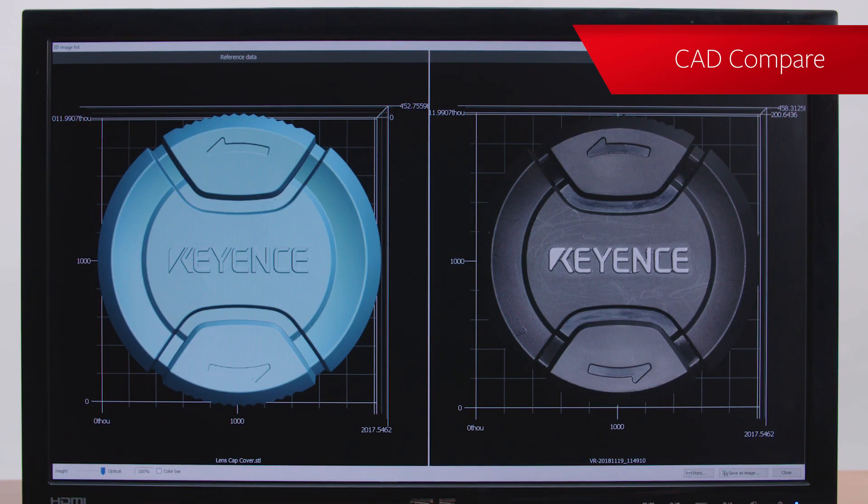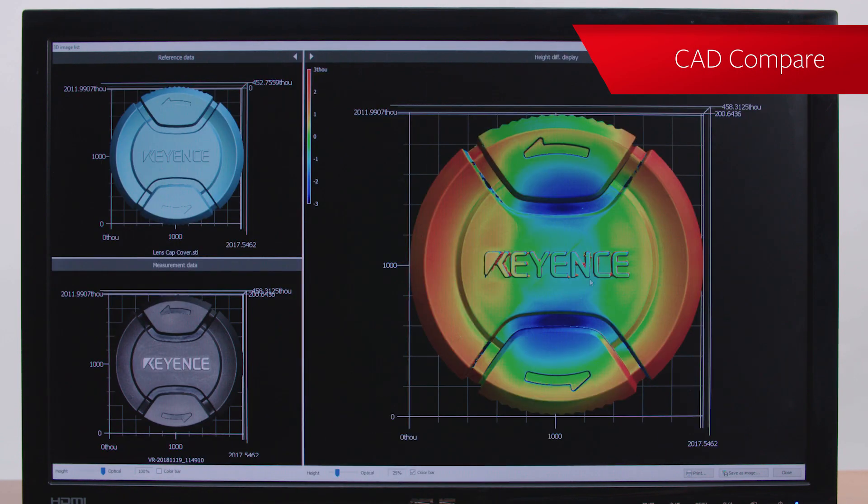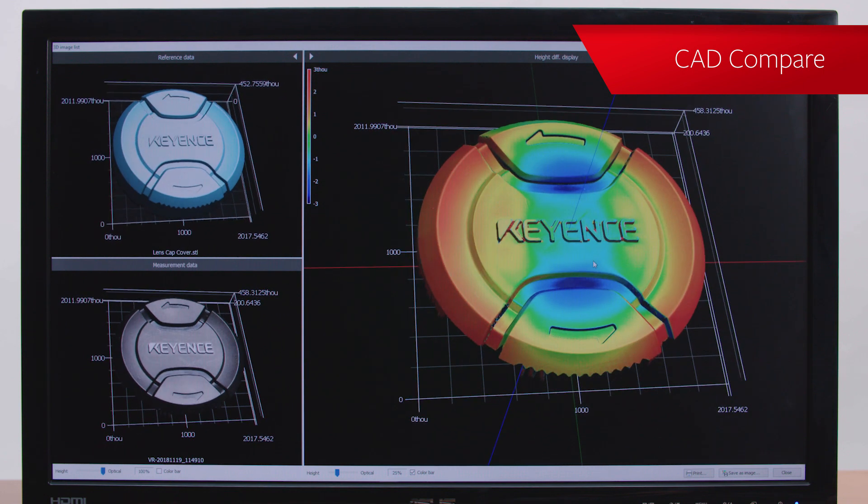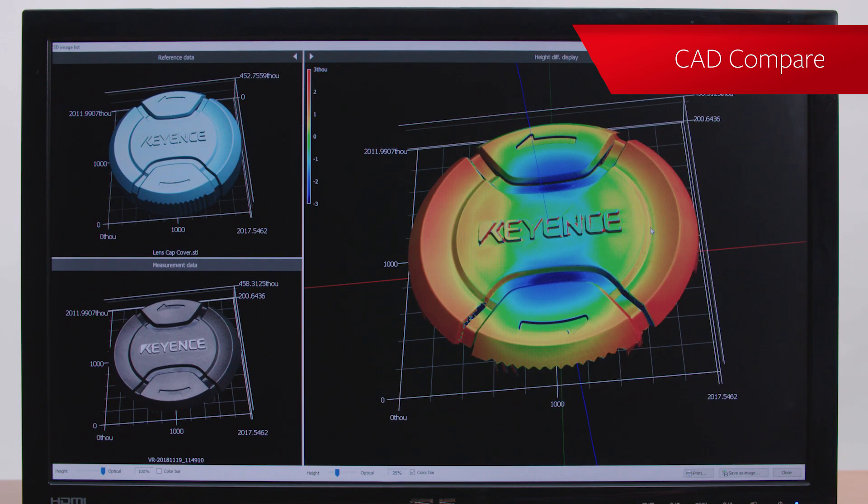CAD Compare can be used to overlay measurement data with CAD files, helping to verify product design and understand how a manufactured part will perform compared to the design.